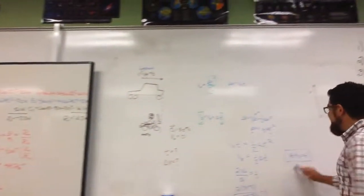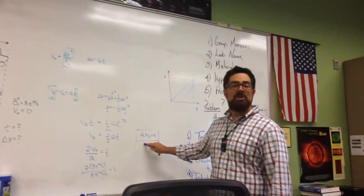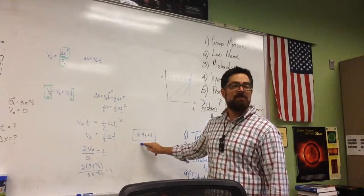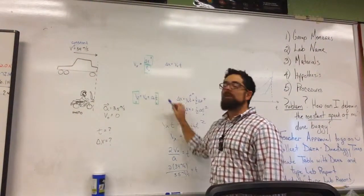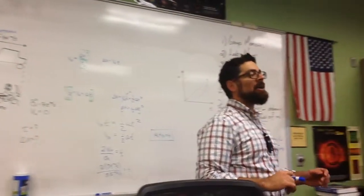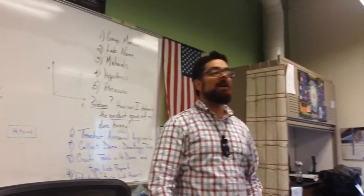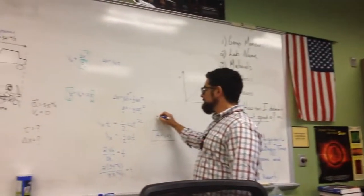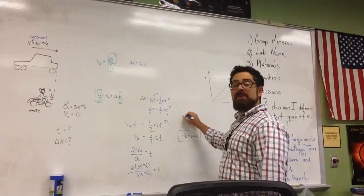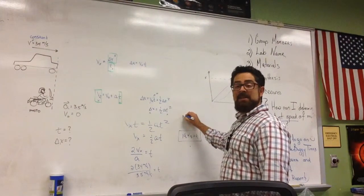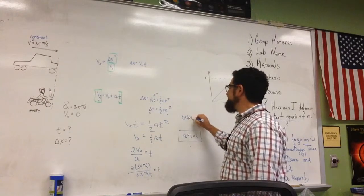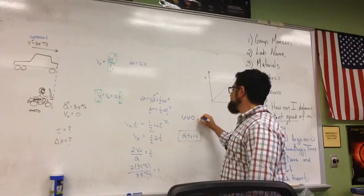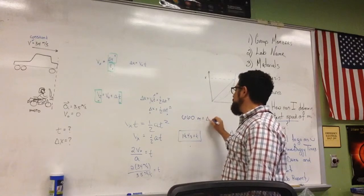So we take the 19.4 seconds. What do we do with the 19.4 seconds? We backfeed it into either of those models, either of those models to find delta X. It doesn't matter which one, and we get what number. I'm sorry? 616? Thank you. 660. Thank you. I appreciate that. 660 meters will be the horizontal displacement.